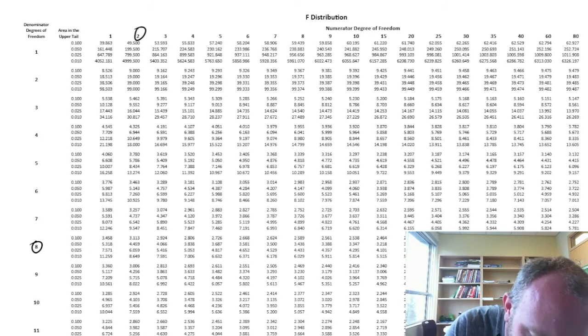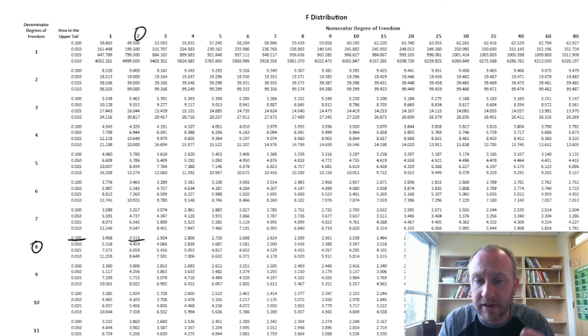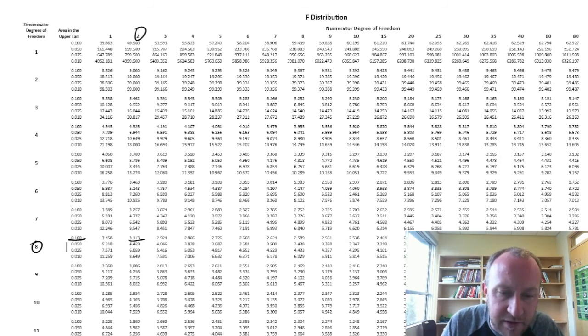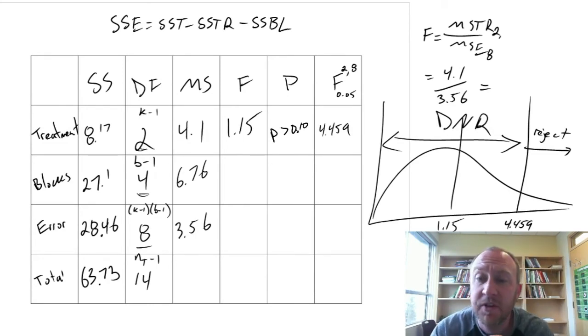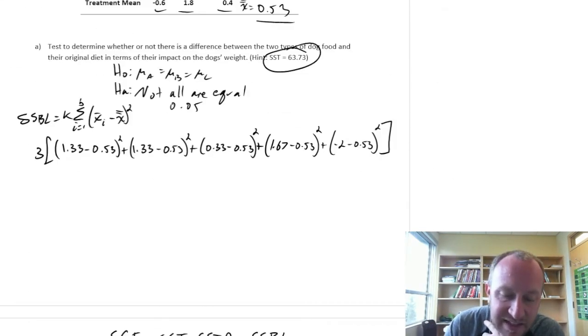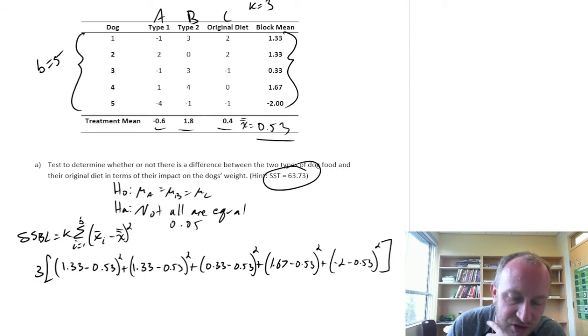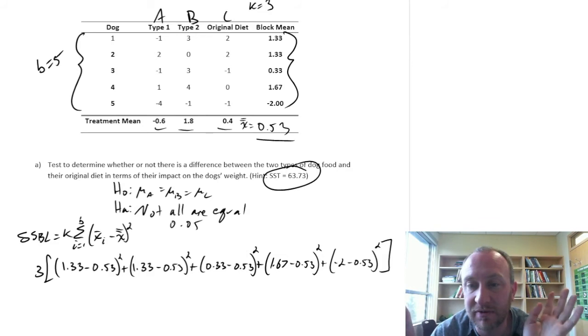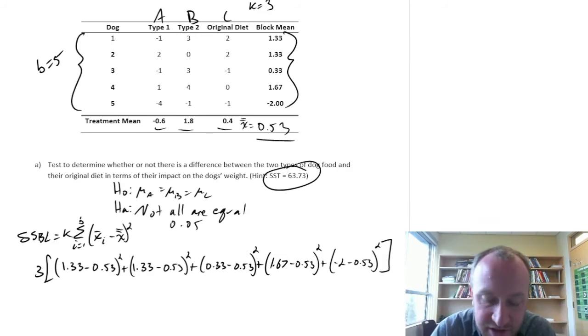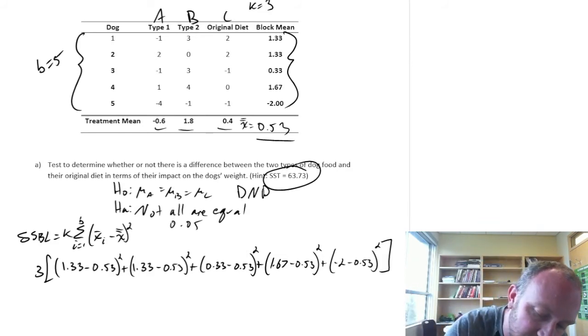Clean this up. So 1.15. Well it's smaller than our smallest here. It's smaller than 3.11. So our p-value must be larger than 0.1. So that checks out. That's consistent with our critical value result. So we do not reject. We have insufficient evidence to show that there is any difference at all between these two dog foods and their original diet. Do not reject.